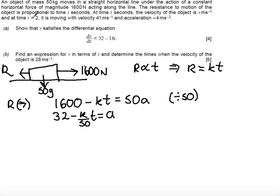Now, in the question, I'm told that t equals 2 and a equals minus 4. So I can use this now to find my constant.